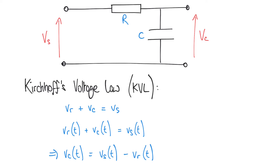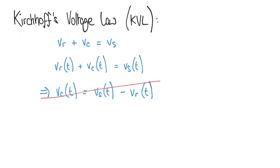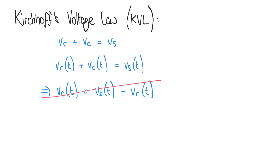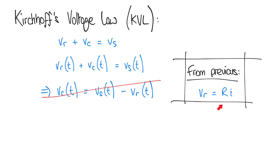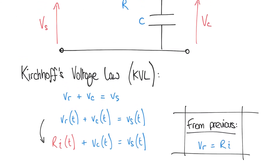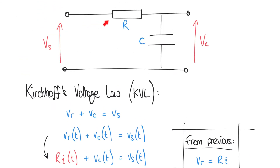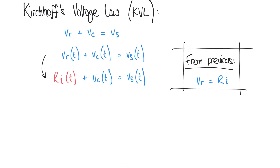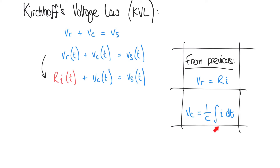We could rearrange to VC equals VS minus VR, but this isn't helpful because we don't know VR — its value depends on VC. Recalling the building block for the resistor from the previous video, VR equals RI, we substitute to get RI(t) plus VC(t) equals VS(t). Since this is a series circuit, the same current I flows through both the resistor and the capacitor. Recall also that VC equals 1/C multiplied by the integral of I with respect to time.